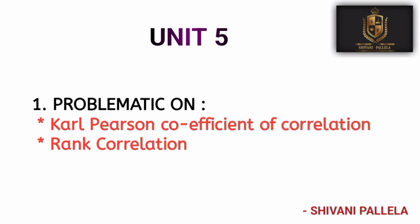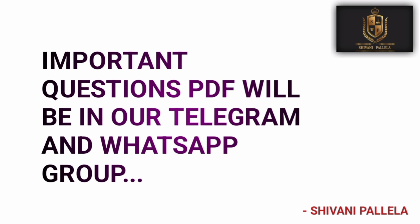For Unit Five, there are no theory questions — only problematic in Part B. The two methods are rank correlation and Karl Pearson's Coefficient of Correlation. If you are perfect with either one, that's fine; if you know both, even better. If you master any one method each from Unit Four and Unit Five, you will definitely score in Part B.